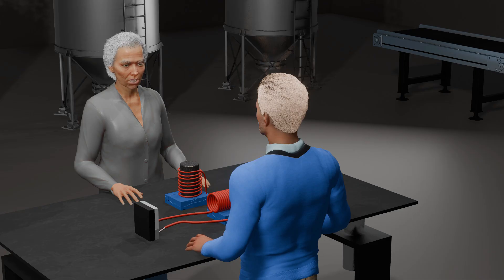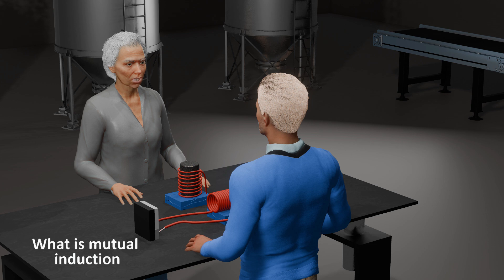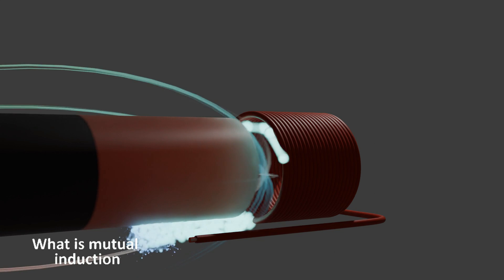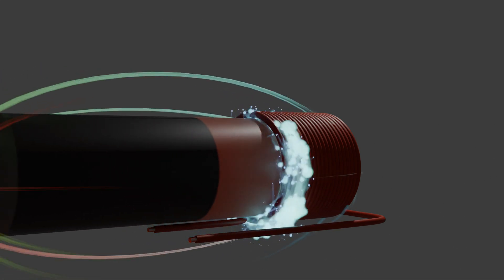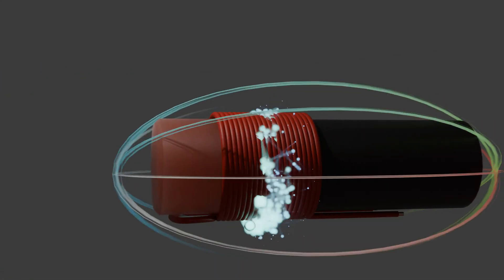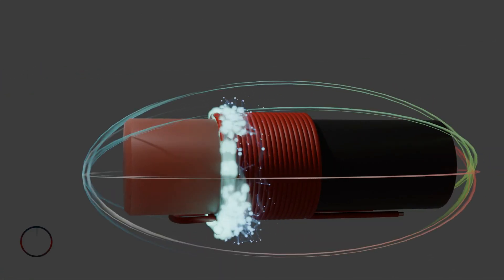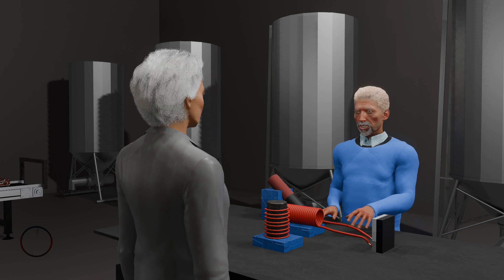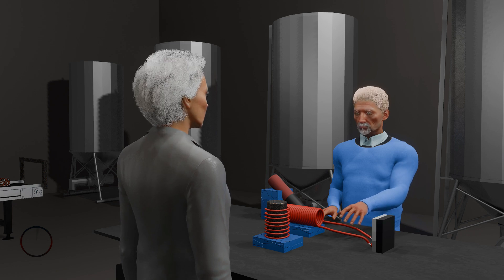By definition, electromagnetic induction is the process in which an electromagnetic force is induced in an electric conductor when brought into a changing magnetic field. So looking at this circuit here.